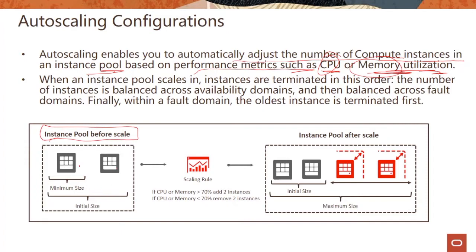Looking at this graphic, it explains the process. You have an instance pool — before scaling you have a minimum size and an initial size. You define scaling rules: if CPU is greater than 70% add two instances; if CPU or memory threshold falls below 70%, remove two instances. So with an initial size of two, if CPU goes beyond 70 you add one instance at a time.